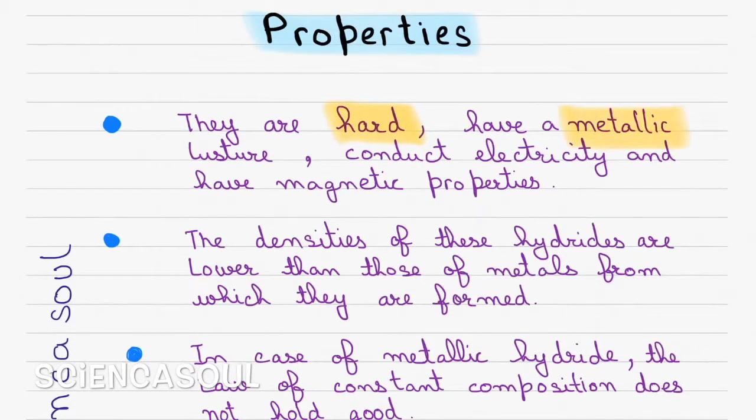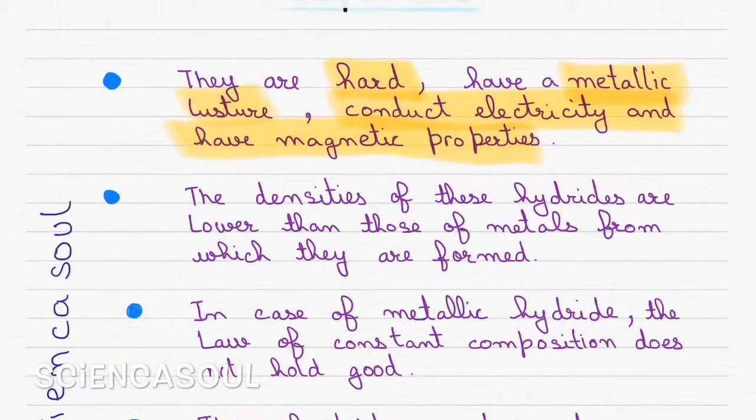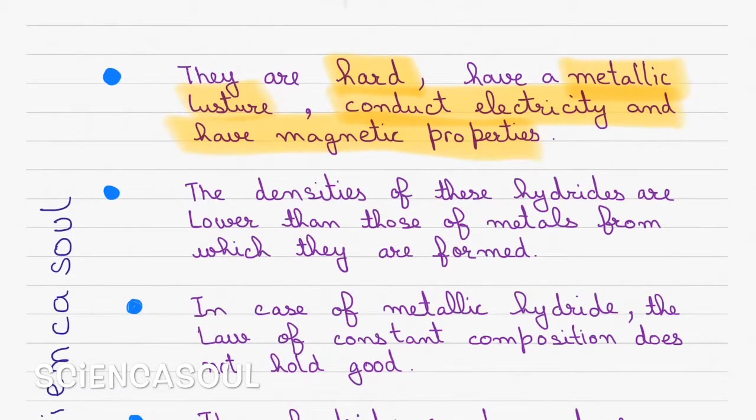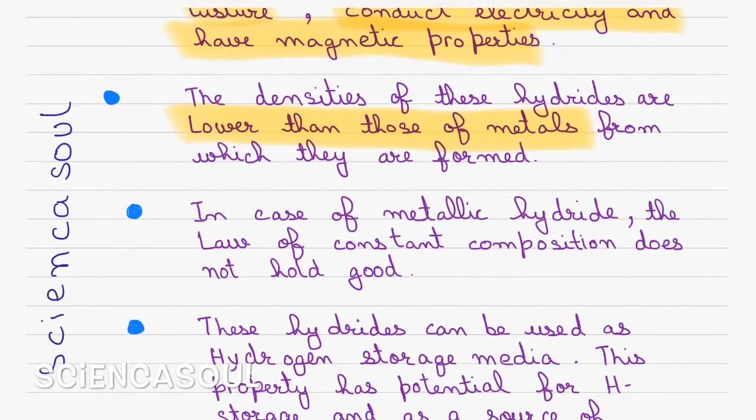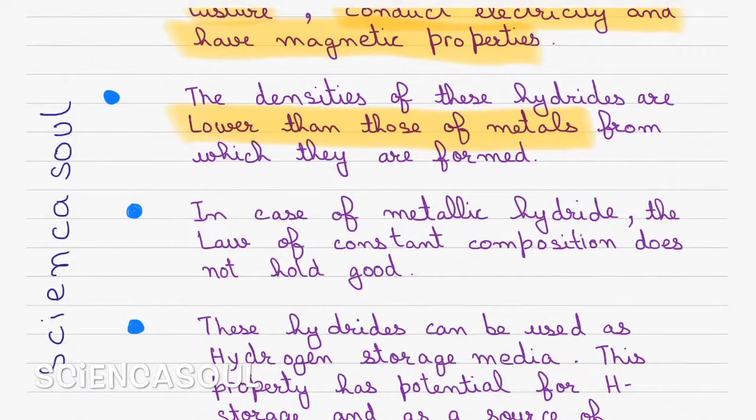They have metallic luster, conduct electricity, and have magnetic properties. Second, the densities of these hydrides are lower than those of metals from which they are formed. Ionic hydrides are opposite in this property; they have higher density than those of metal from which they are formed. In case of metallic hydride, law of constant composition does not hold good.